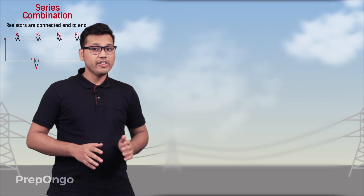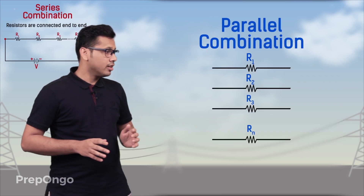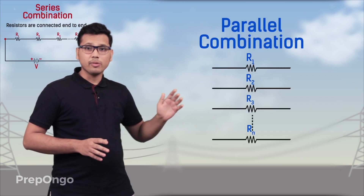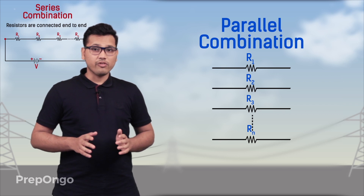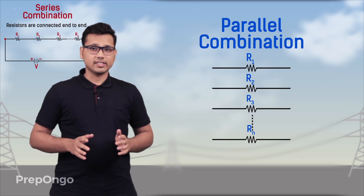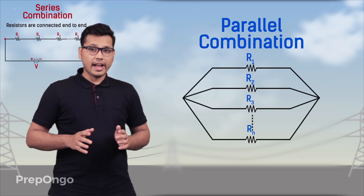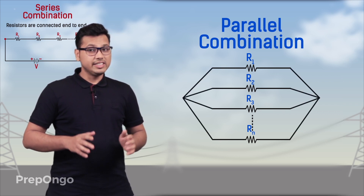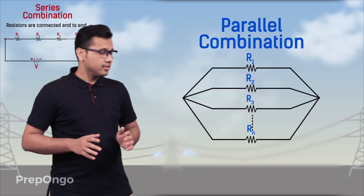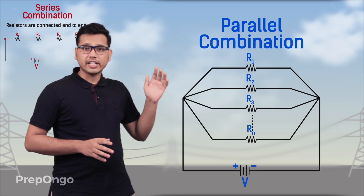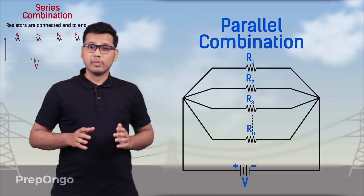In parallel combination, the ends of all the resistors are tied together, and then these ends are connected to the positive and negative terminals of the battery.